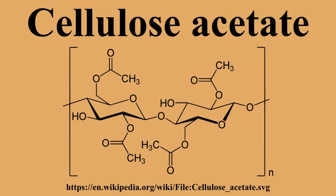Cellulose acetate is the acetate ester of cellulose. It was first prepared in 1865. Cellulose acetate is used as a film base in photography, as a component in some coatings, and as a frame material for eyeglasses. It is also used as a synthetic fiber in the manufacture of cigarette filters and playing cards. In photographic film, cellulose acetate replaced nitrate film in the 1950s, being far less flammable and cheaper to produce.